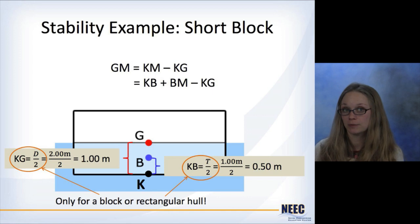For this particular block, it's floating half in the water and half out of the water. Because it's uniform density, the center of gravity is in the middle of the block. So KG is just the depth divided by 2. In this case, KG is equal to 1 meter.